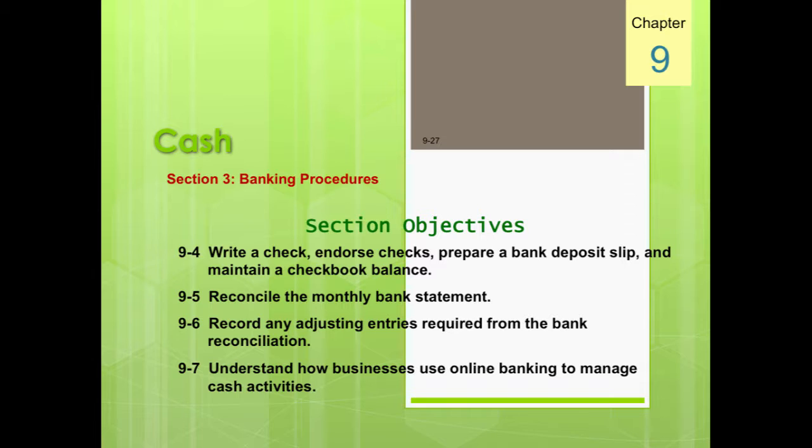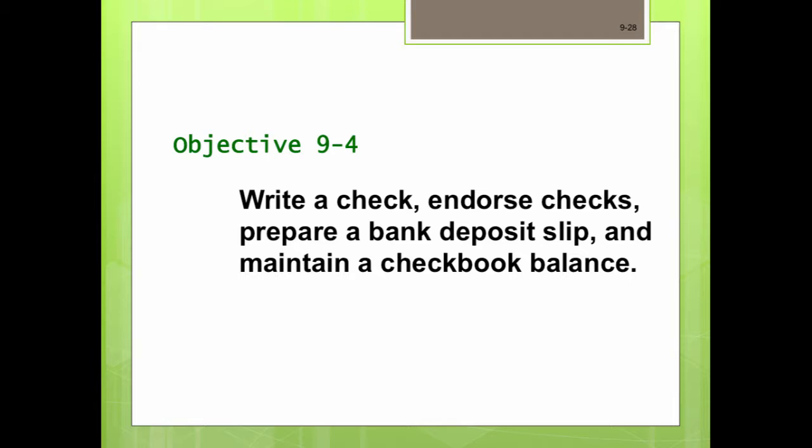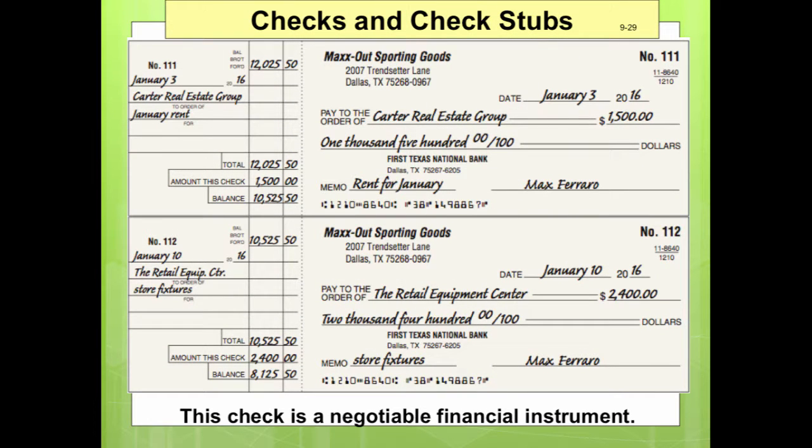The last section of this chapter addresses reconciling a bank statement and explains how businesses can use online banking to manage cash. Objective four discusses proper banking procedures involving checks, deposits, and maintaining a checkbook. A check is a written order signed by an authorized person instructing a bank to pay a specific sum of money to a designated person or business. The drawer is the person or firm issuing the check; the drawee is the bank on which the check is written; and the payee is the person or firm to whom the check is payable.